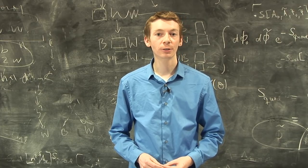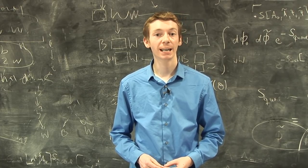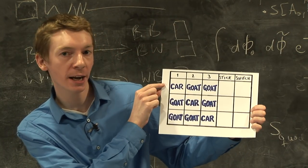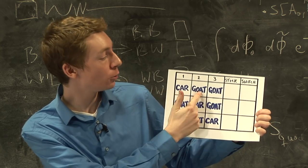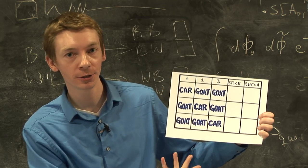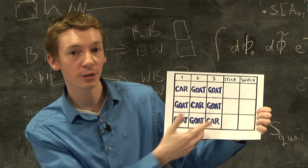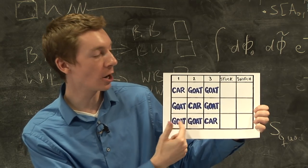Now, with three doors, it becomes a bit more counterintuitive. Here we go. There are three options. You could have the car behind the first door, and a goat behind the second door, a goat behind the third door. In the second case, you could have goat, car, goat. And in the third case, you'd have goat, goat, car.